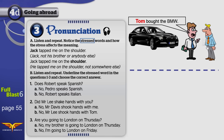Did you notice how he said it? He said, 'Tom bought the BMW.' Which word is stressed? Which word is important here? Which word was said differently? I said, 'Tom bought the BMW.' 'Bought' was normal — 'bought the BMW.' But when I said Tom, I said, 'Tom bought the BMW.' It was stressed. Why? We know that somebody bought this BMW. We don't know who. Tom is the important part. Tom bought the BMW.